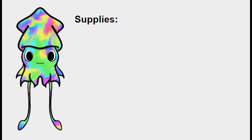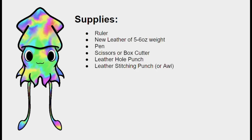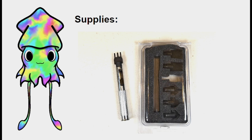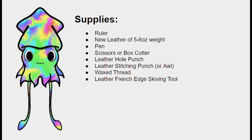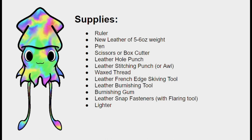So the supplies you'll need are a ruler, new leather of five to six ounce weight (the weight refers to the thickness of the leather), a pen, scissors or a box cutter, a leather hole punch (I use one that looks like this), a leather stitching punch or awl (this is the leather stitching punch I use with interchangeable heads and this is my awl), wax thread, leather edge skeeving tool (it looks like this), a burnishing tool (it looks something like this), burnishing gum (it'll make it easier to polish the edges of your leather), leather snap fasteners with a flaring tool (my set looks like this), a lighter, leather sewing needles, a hammer, and a semi-soft work surface you're okay with damaging such as a cheap cutting board from the dollar store.